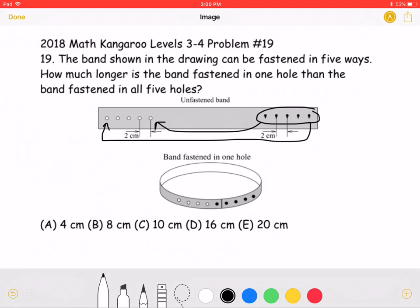Now, to find the difference between the lengths of the bands, we need to take the distance from the fifth hole to the first hole. Between these holes, we have four spaces.